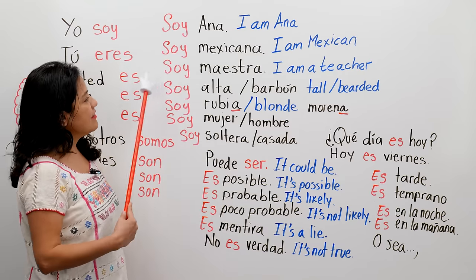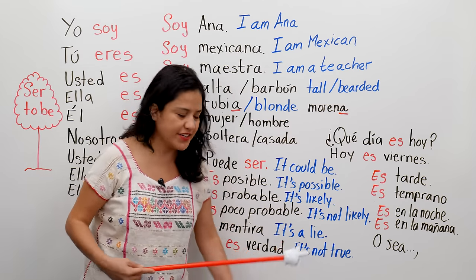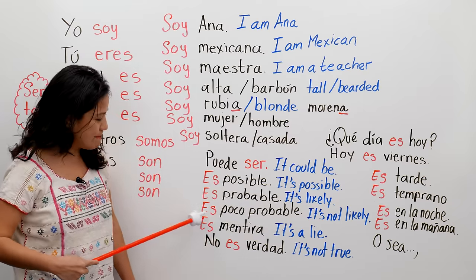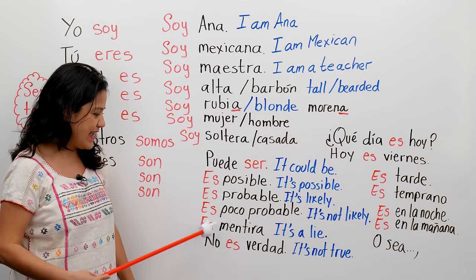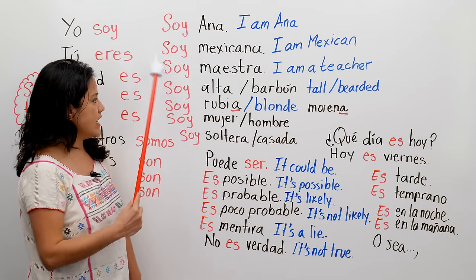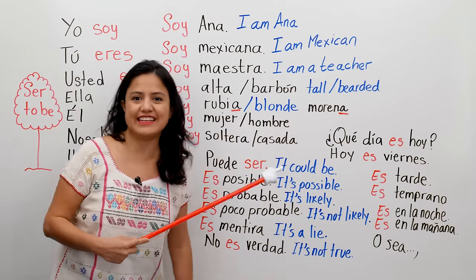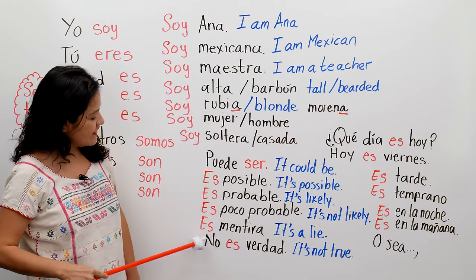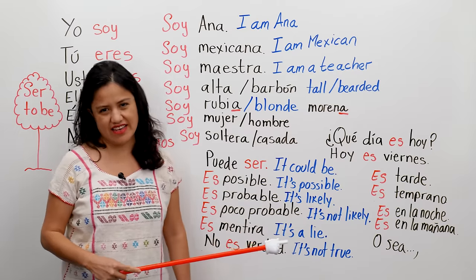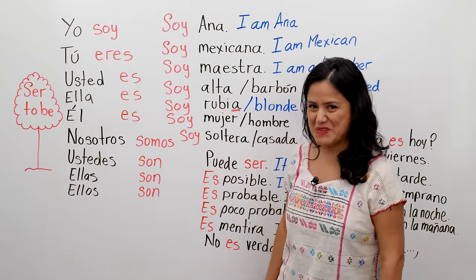Soy rubia — and you could tell me: 'es mentira' — it's a lie. You're not blonde. 'Es mentira' — it's a lie, it's not true. I'm saying I'm blonde and I'm tall — I'm like five foot nine. You could say: 'es mentira — no es verdad, Ana. No eres rubia y no eres alta.'